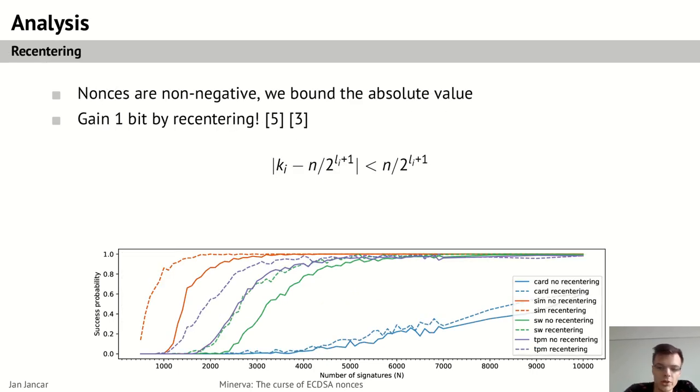Recentering is another possible improvement to a lattice attack like this one that has been used in previous works also. And so as the nonces are non-negative and in the inequalities we are only bounding their absolute value, we can recenter them by subtracting and obtain a bound tighter by one bit. So you kind of subtract this half value and when you are doing an absolute value you kind of gain a tighter inequality.